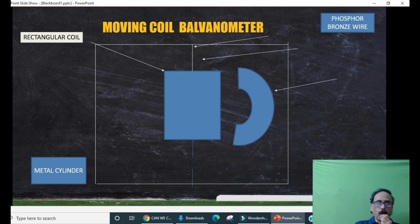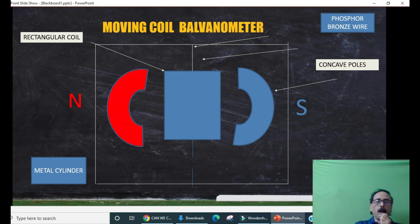This rectangular coil is placed between two concave poles. These two magnetic concave poles will provide magnetic field.